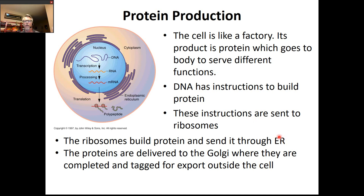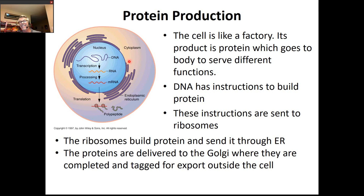After the protein is made by the ribosome, it can go to another organelle called the endoplasmic reticulum — abbreviated ER. The ER can modify the protein: change it, add pieces to it. When finished there, it goes to another organelle called the Golgi, which is like a FedEx delivery system. The Golgi packages proteins and ships them off to where they need to be — finishing them off, tagging them, sending them out of the cell or to a specific place inside the cell.